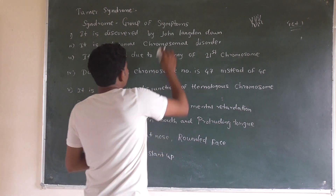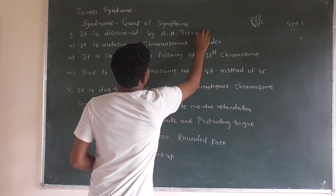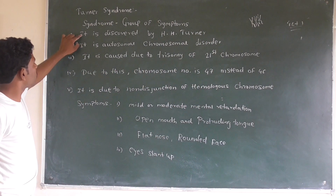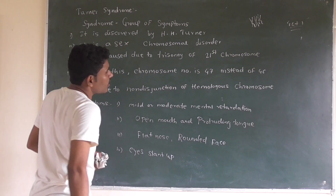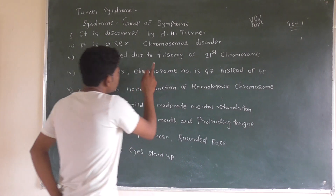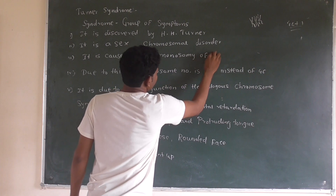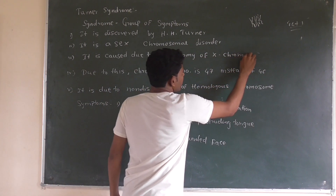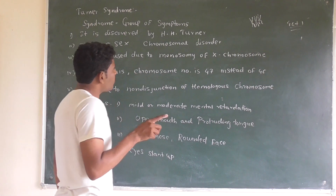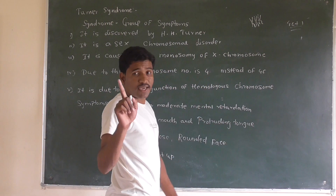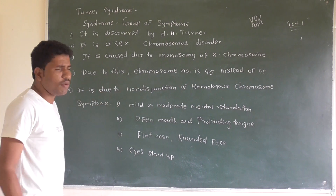The next syndrome is Turner syndrome, discovered by H.H. Turner. Turner syndrome is related to a sex chromosomal disorder. It is basically caused due to monosomy of the X chromosome, meaning one X chromosome is missing.